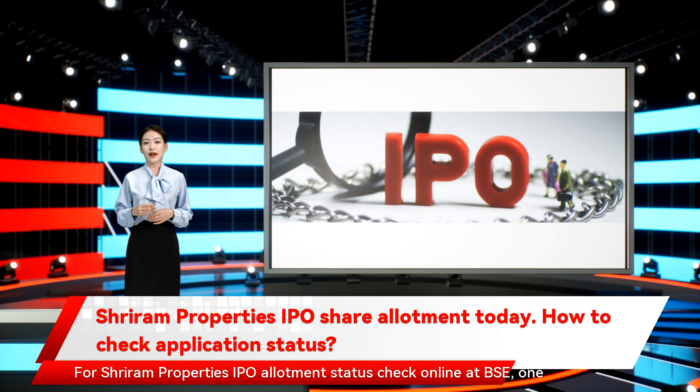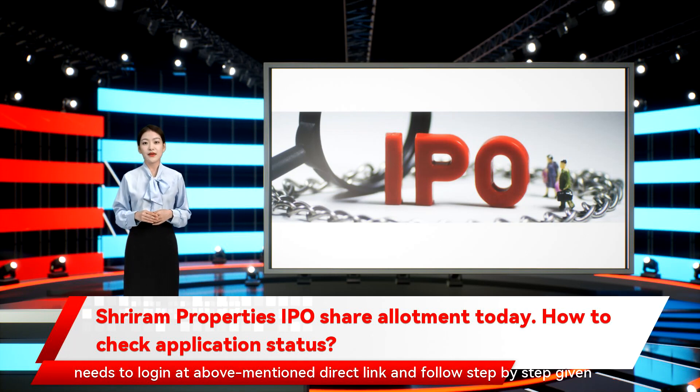For Shriram Properties IPO allotment status check online at BSE, one needs to log in at the above-mentioned direct link and follow the steps given below.